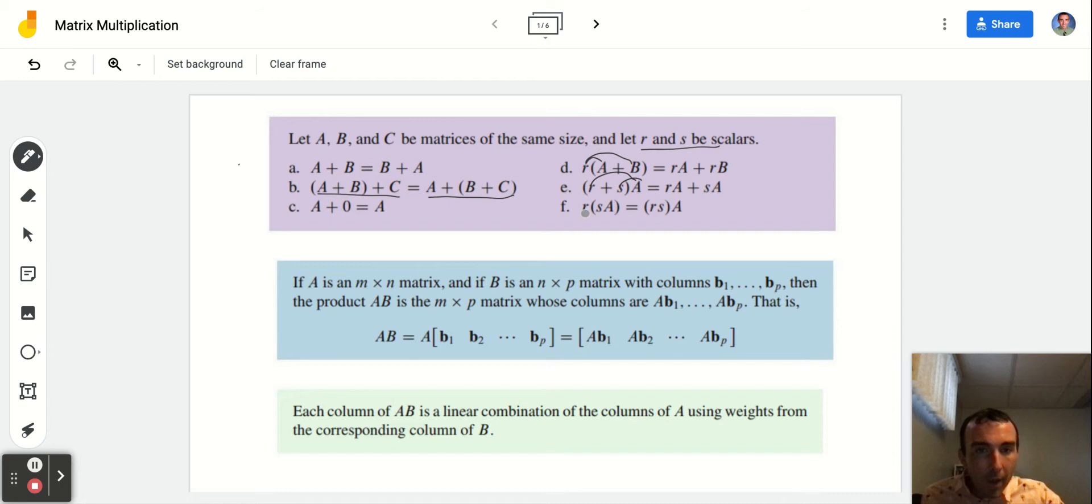So I could do R times S first, then go to A, or I can multiply matrix A by S, get that result, then multiply by R, or I can multiply the scalars first, then multiply by matrix A. It doesn't matter.